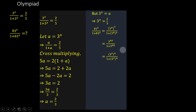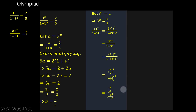We got a value of 3 to the power x equal to 2 over 3. When we substitute 3 to the power x equals 2 over 3 into the expression, we now have 2 over 3, all to the power 4, over 1 plus 2 over 3, all to the power 4. Applying the laws of indices, we get 2 to the power 4 over 3 to the power 4, all over 1 plus 2 to the power 4 over 3 to the power 4. This further simplifies to 16 over 81, all over 1 plus 16 over 81.